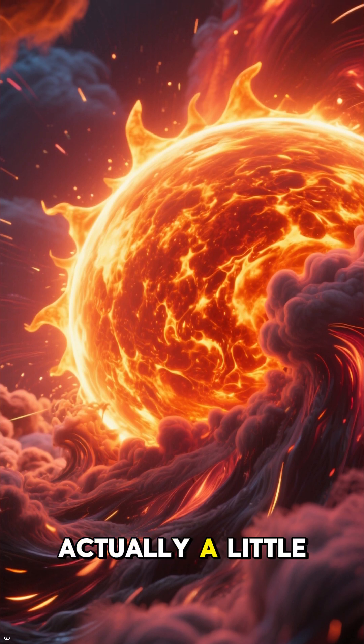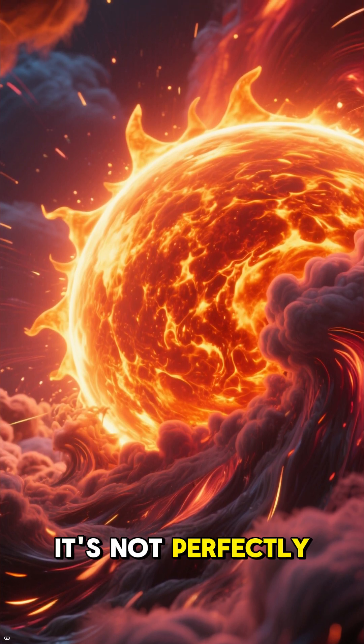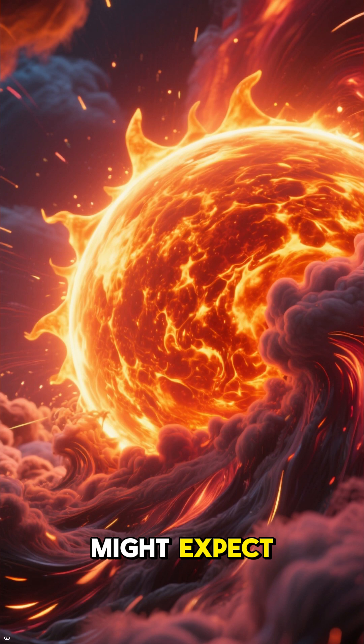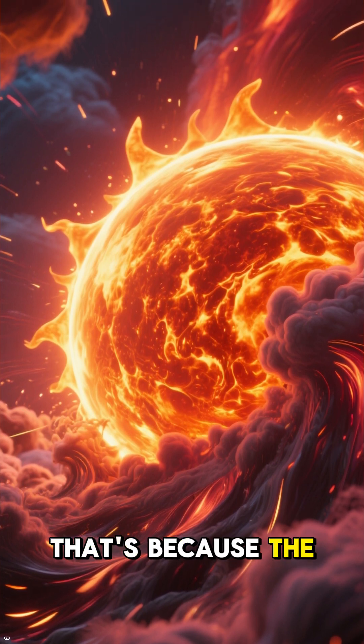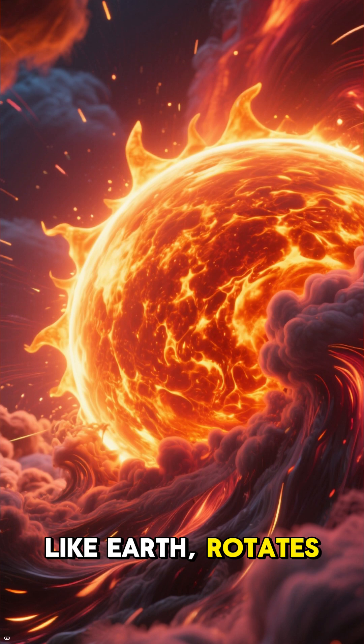Number 2: The Sun is actually a little bit wobbly. It's not perfectly round like you might expect. It's actually flat at the poles and bulging at the equator. That's because the Sun, like Earth, rotates.